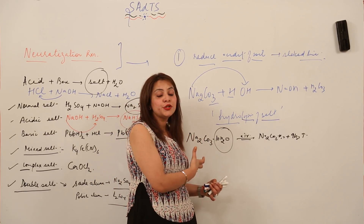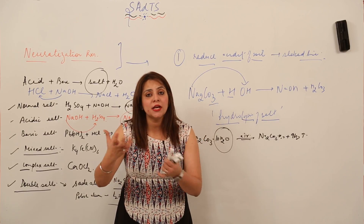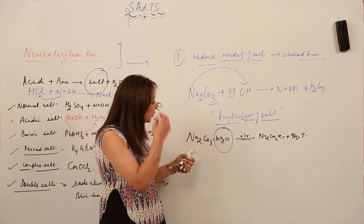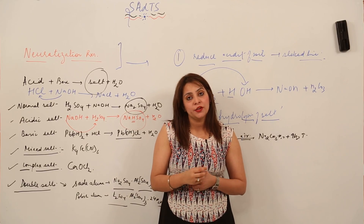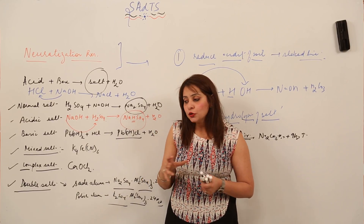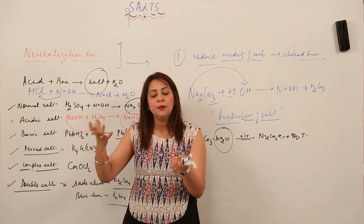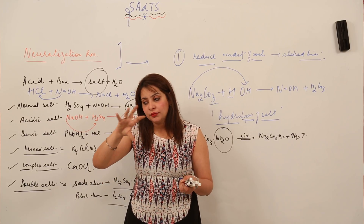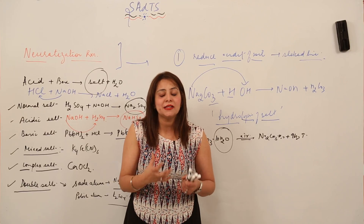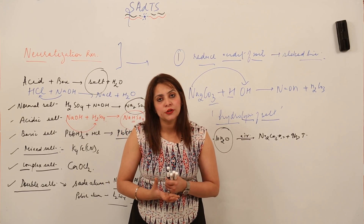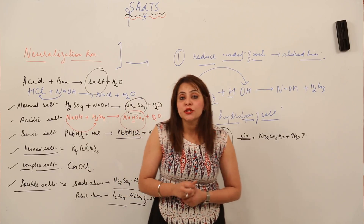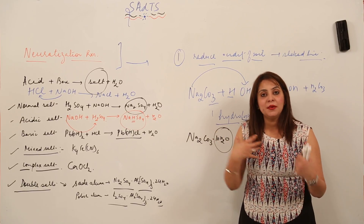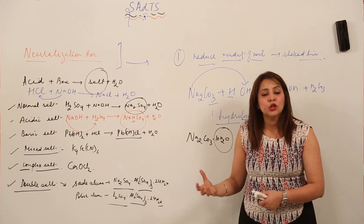Some salts are hygroscopic in nature — when they come in contact with moisture, they change their state. Some salts also act as deliquescent. So salts have different kinds of nature: some are deliquescent, some show efflorescence, some are hygroscopic, and some are used as drying agents.